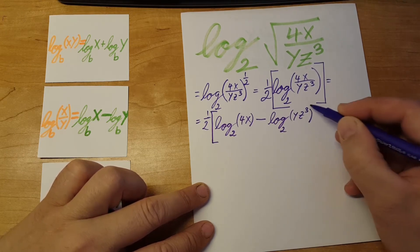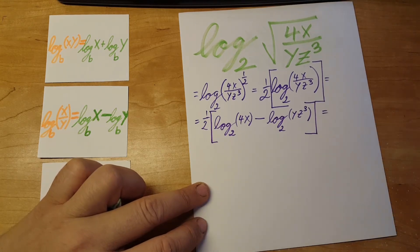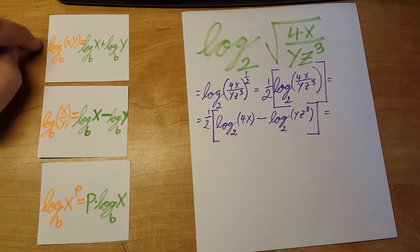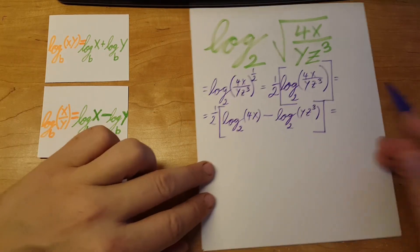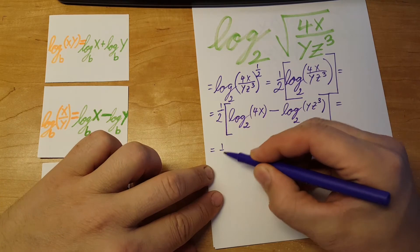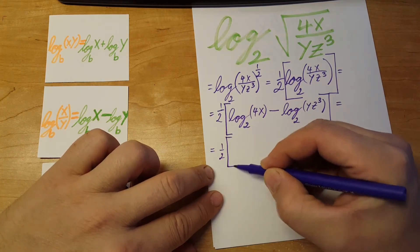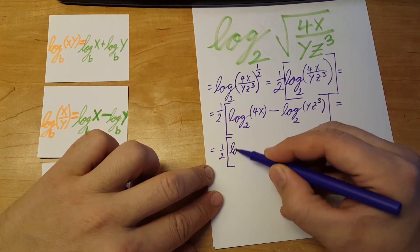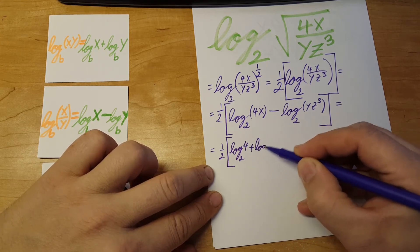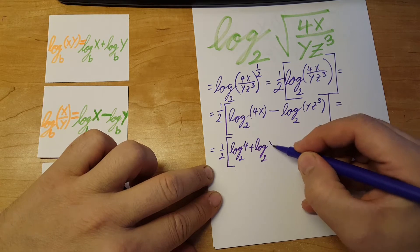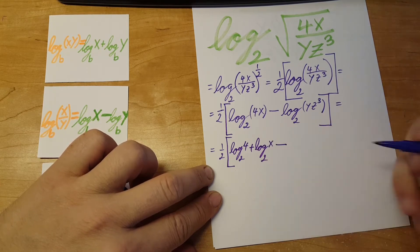Now we're going to use the product rule to break this up. One-half times [log base 2 of 4 plus log base 2 of x minus...]